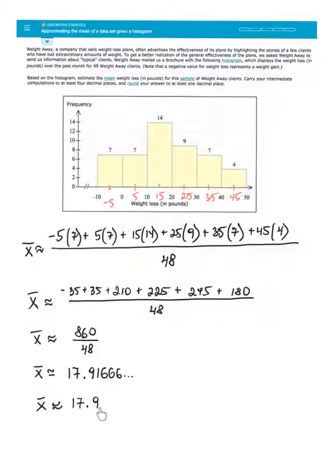When I'm rounding this to one decimal place, at least as requested. You could have rounded it to more decimal places if you want to. It means that, on average, within the sample of 48 clients, people lost 17.9 pounds.